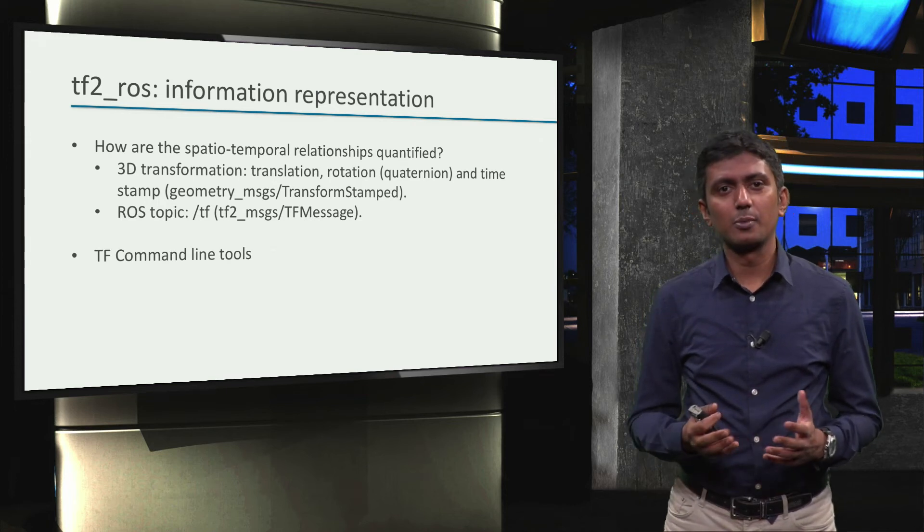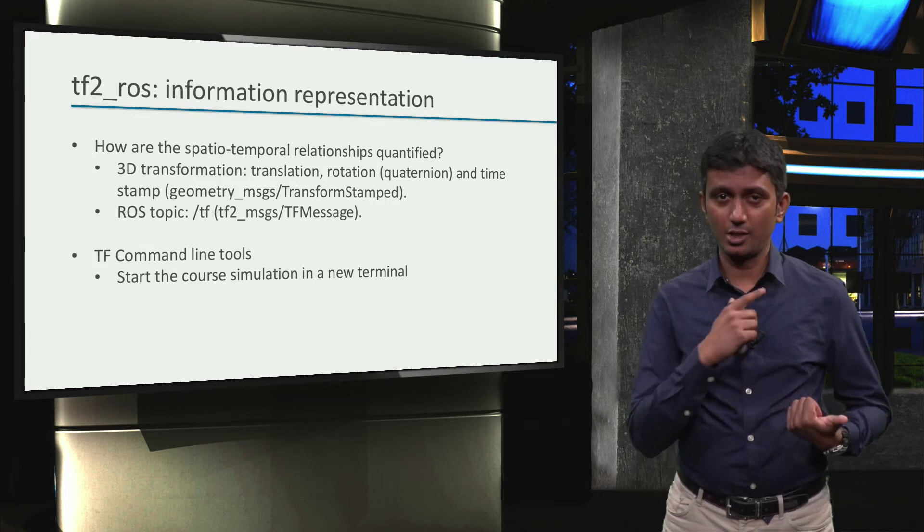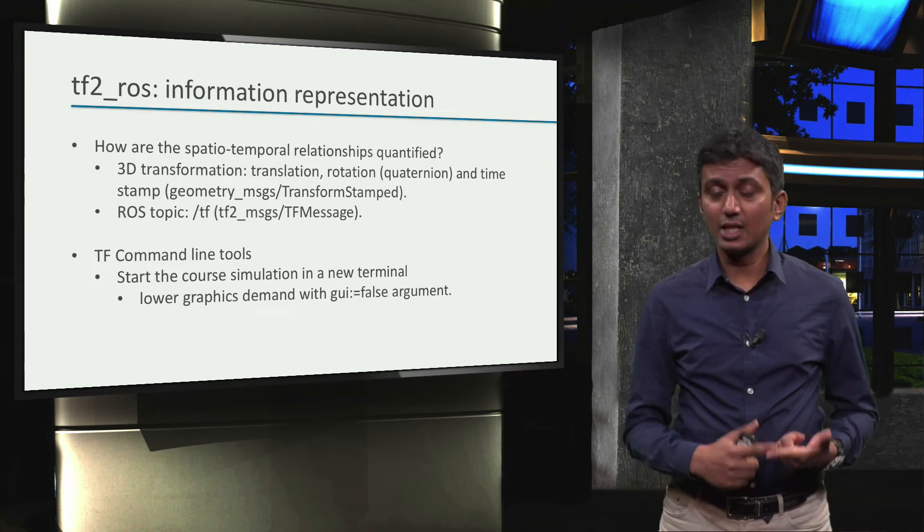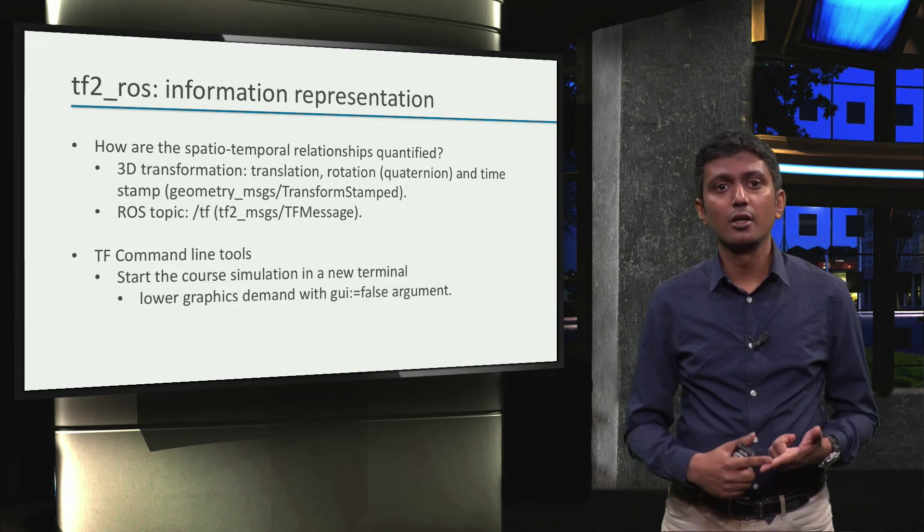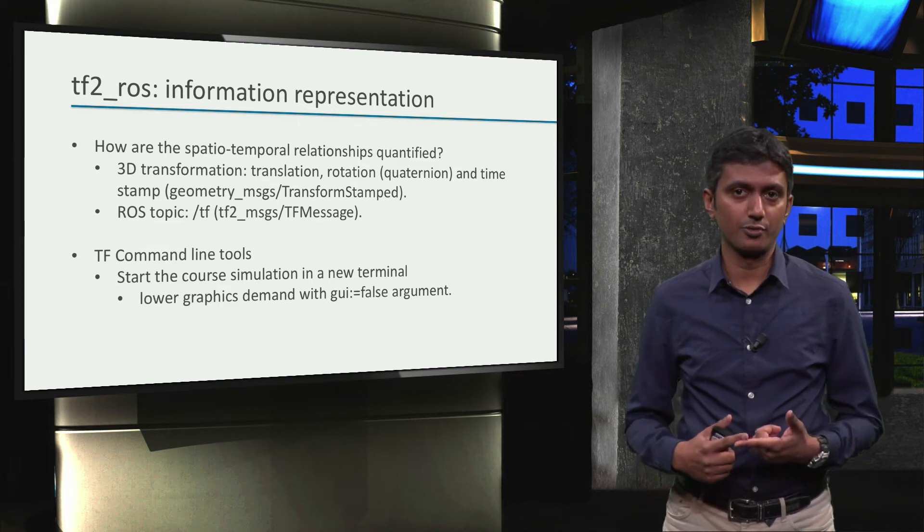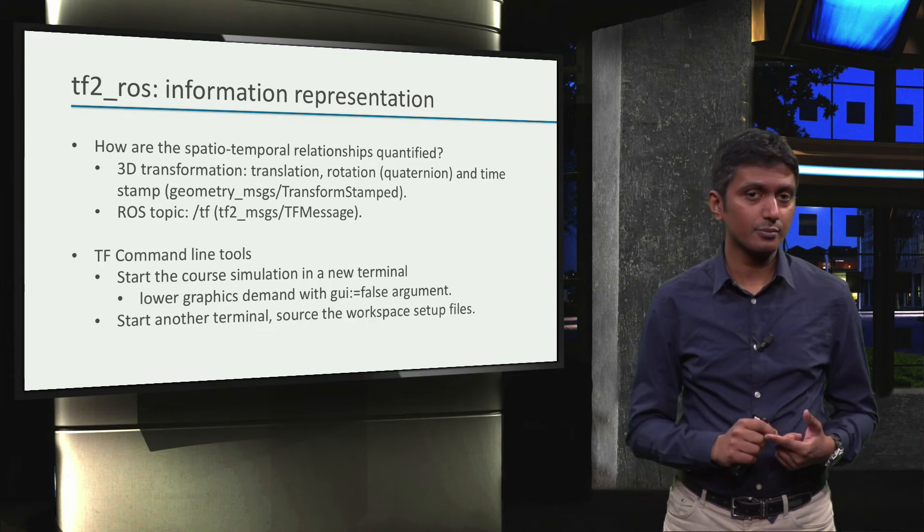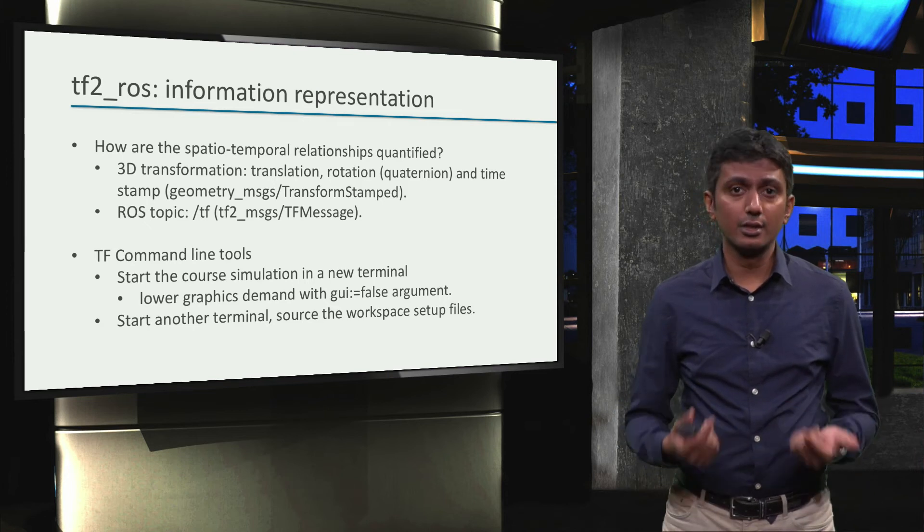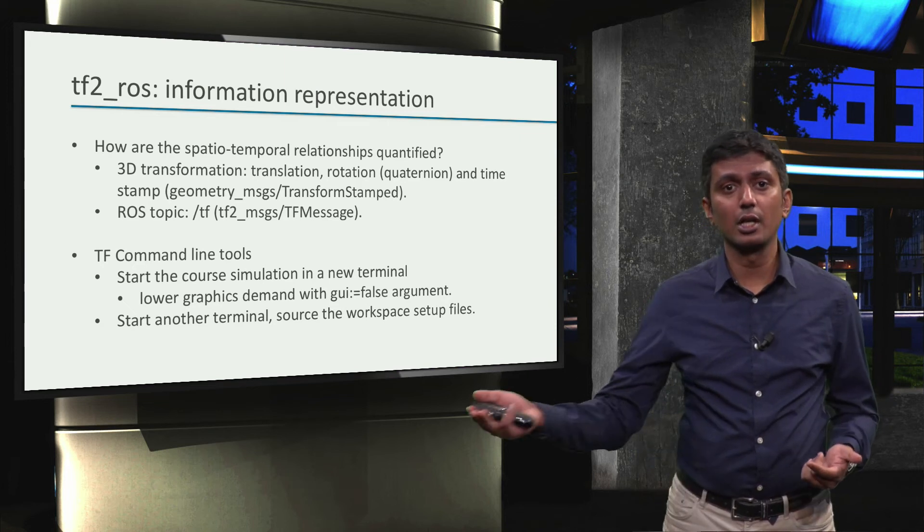Alright then, let's explore some tf command line tools. But before that, we will have to start our factory simulation in a new terminal. Since we are inspecting some tools without moving our robots, we can reduce the graphics demand by launching the factory simulation with the GUI:=false argument to the hrwros_environment launch file. Recall that we learned how to start launch files with arguments in week 1. Once our factory simulation is running, we can start another terminal and source our setup files, which prepares us to execute the different command line tools we will learn now.